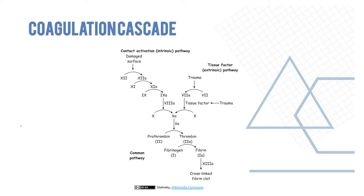The extrinsic pathway is activated by factor 7 to 7a, which then activates factor 10, which is further cleaved by factor 5a, and then prothrombin-to-thrombin formation happens. In the intrinsic pathway, the damaged surface causes activation of factor 12, which leads to activation of factors 11 and 9, and then factor 8 converts factor 9 to factor 10. From there, the two pathways converge: prothrombin is converted to thrombin, fibrinogen is converted to fibrin, and factor 13 forms a cross-linked fibrin clot.